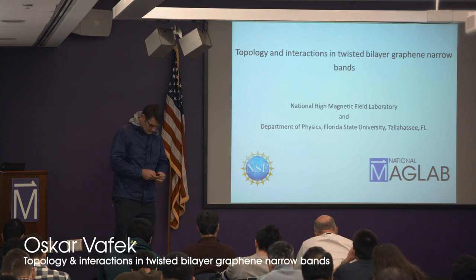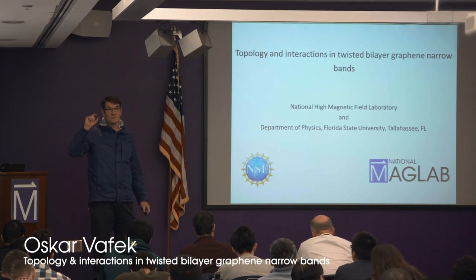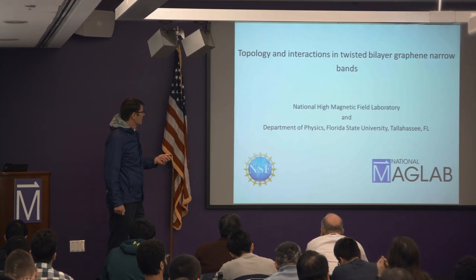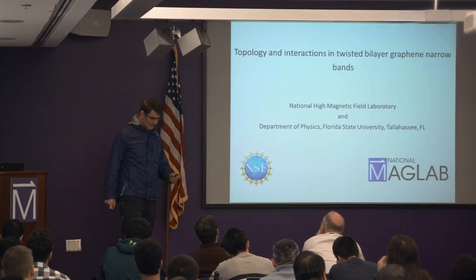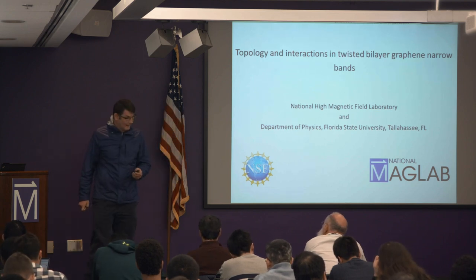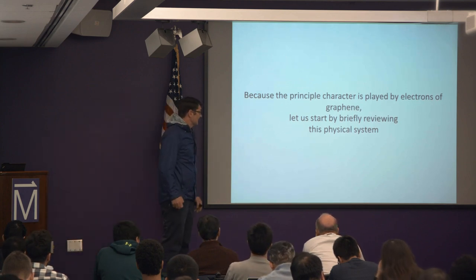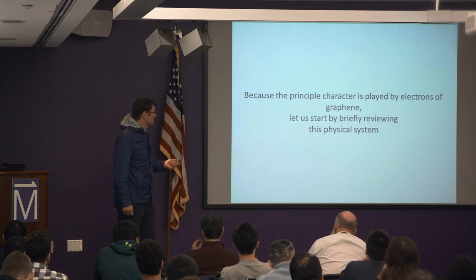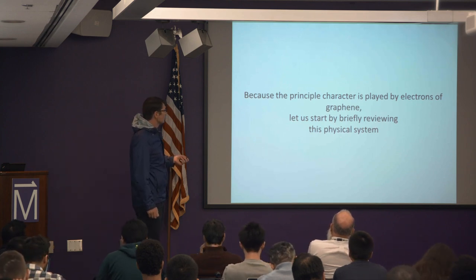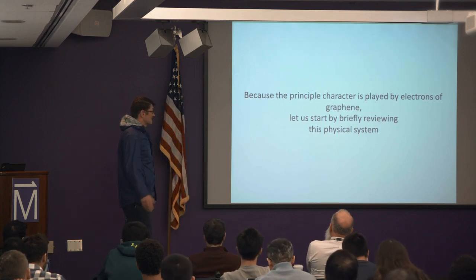This talk will be about twisted bilayer graphene — not double bilayer graphene — in the same spirit as the previous discussion. Most of the original work was done here at the Mag Lab at Florida State. Let me briefly review the physical system, as the principal character in this story will be played by electrons in graphene.